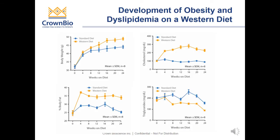Shown here on the upper left-hand panel, the animals on the Western diet are in orange and the animals on the standard diet are in blue. You can see rapid weight gain in the Western diet animals as compared to those animals that remain on a standard diet. On the bottom, percent body fat shows that these animals become significantly higher in body fat as compared to their counterparts on standard diet. Cholesterol levels are significantly increased as shown in the upper right-hand corner. However, triglyceride levels were not significantly different compared to the standard diet — an interesting finding, but as I will show in the next slides, liver triglycerides were significantly different.